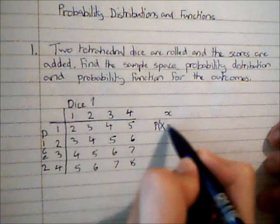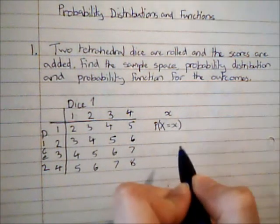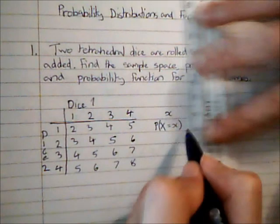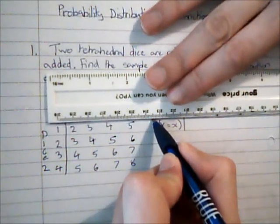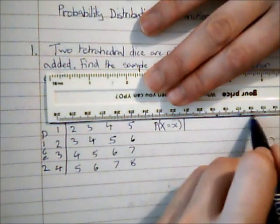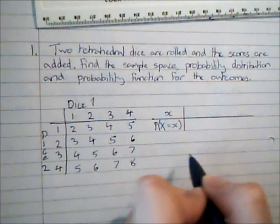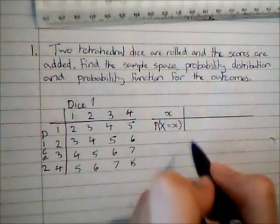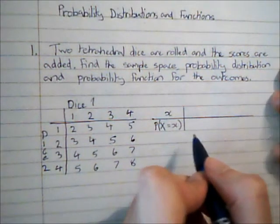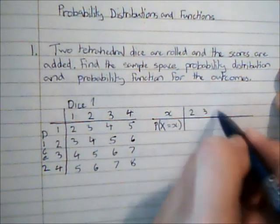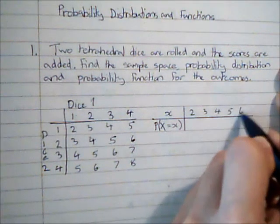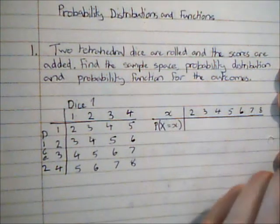So what this means basically is what is the probability that when we roll the dice, which is represented by the capital X, what is the chance that we get each specific outcome? So what can we get? Well, we can get anything from 2 to 8.